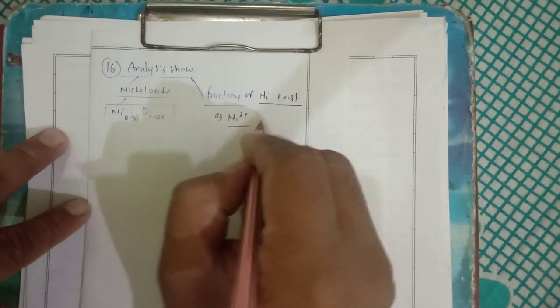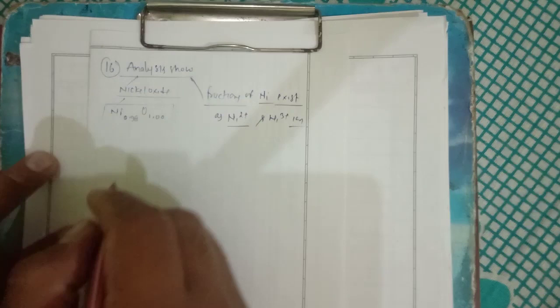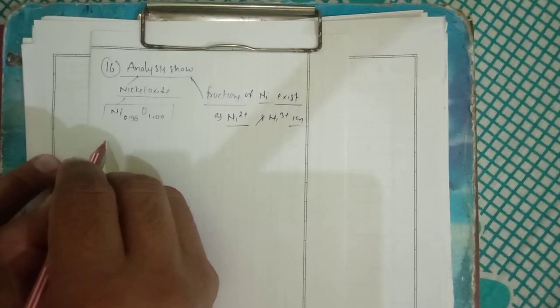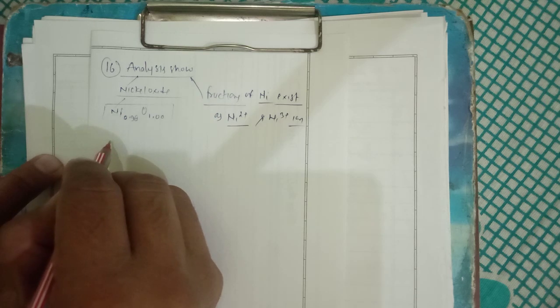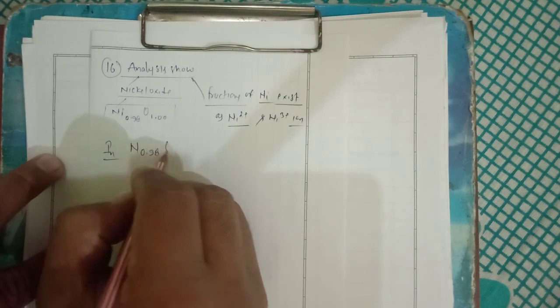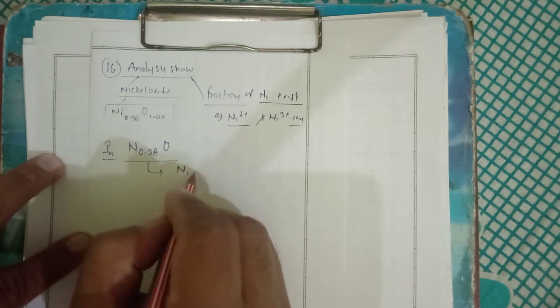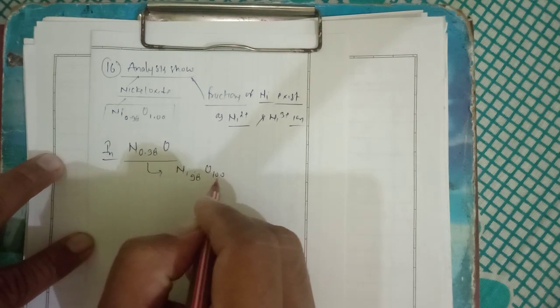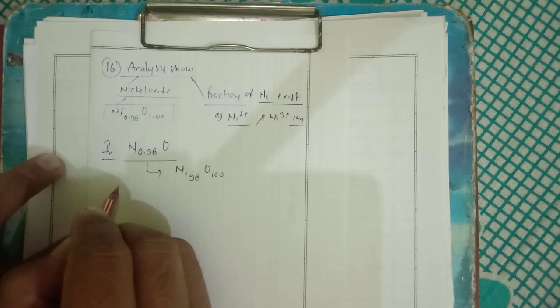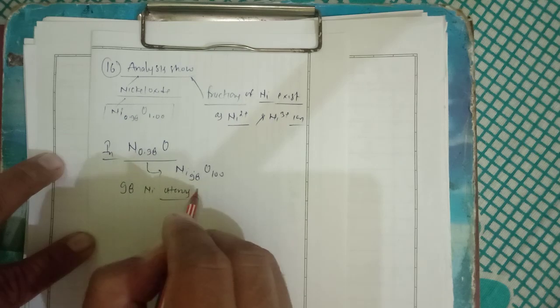So here in Ni₀.₉₈O it implies that it is nickel 98, oxygen 100. So here 98 nickel atoms are associated with 100 oxygen atoms.